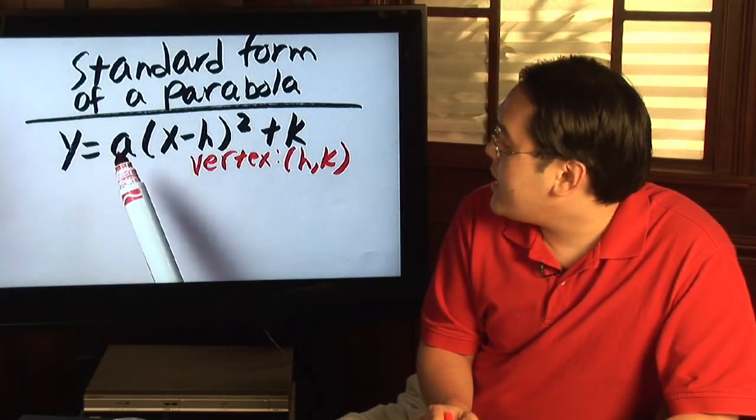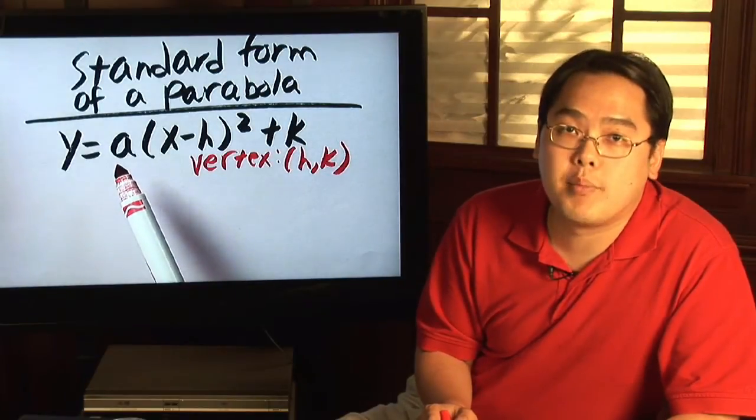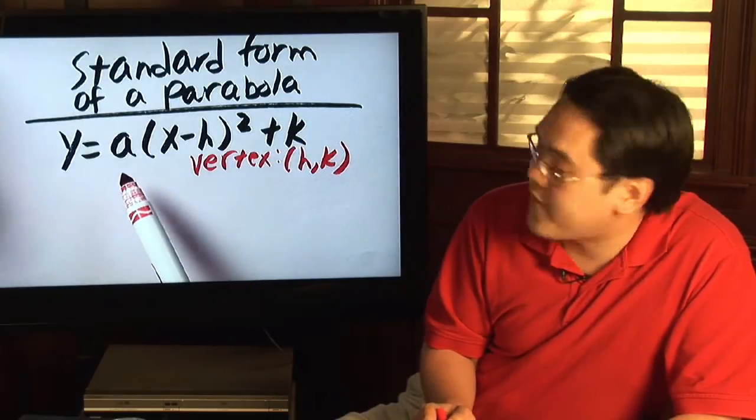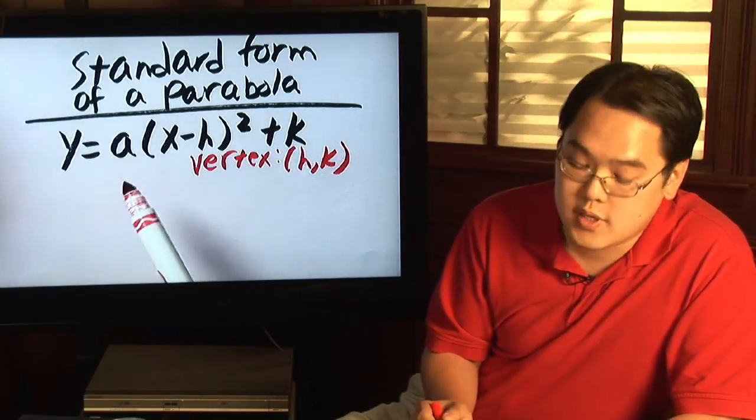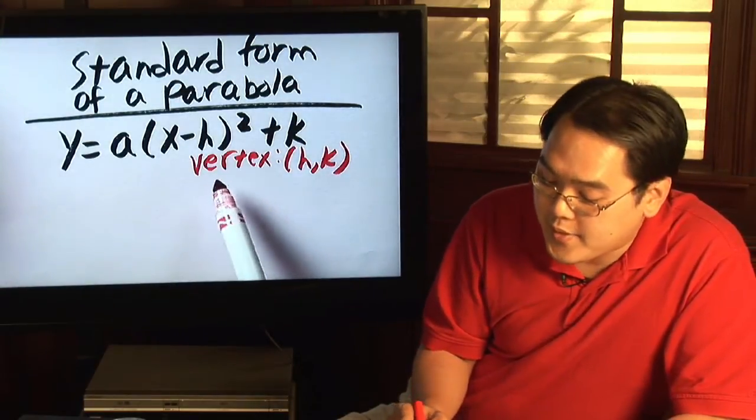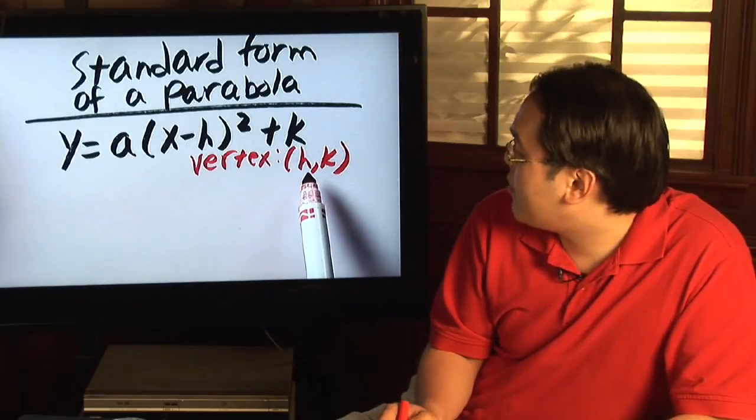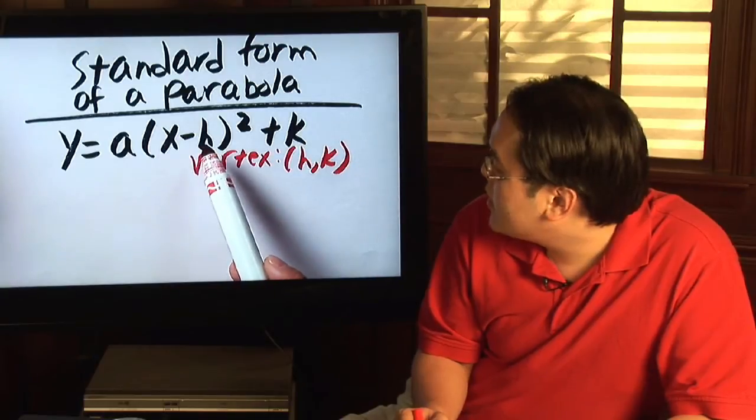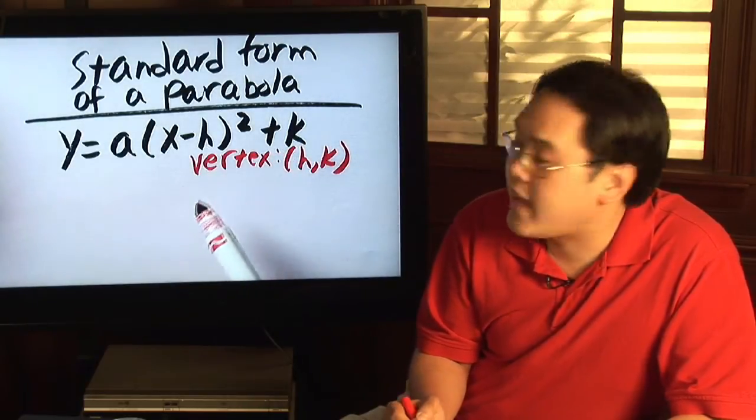Now you notice here, a tells you what kind of a parabola it is. If a is positive, it opens upward, kind of like a smiley face. And if a is negative, it's downward, a frowny face. Now the vertex refers to the tip of a parabola, and if you notice here, you have to go opposite the sign for h, but go with the sign for k.